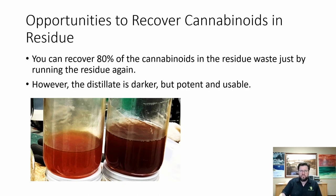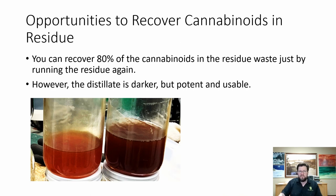There are also opportunities to recover more cannabinoids that may be lost in the residue. Notice that you're getting 79% cannabinoids, but a lot is also going into the residue. You can recover about 80% of the cannabinoids in the residue waste just by running the residue again. That's not a part of the automated system, but you can warehouse that and run it separately later as a secondary process. Because you're running it twice, the distillate is typically darker, but it's very potent and usable.